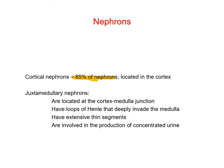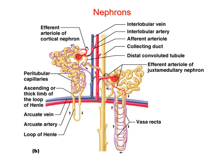In cortical nephrons, the glomerulus is located in the cortex and the loop of Henle dips down into the medulla. Juxtamedullary nephrons have their glomerulus closer to the corticomedullary junction and the loop of Henle dives deeper into the medulla, giving them the ability to form a more concentrated urine. This diagram illustrates both types of nephrons — the cortical nephron and the juxtamedullary nephron.